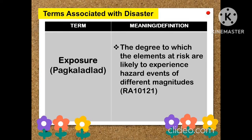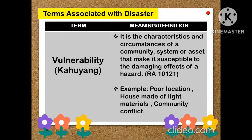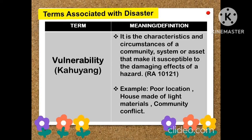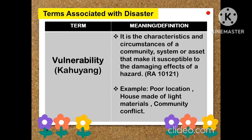Exposure is the degree to which the elements at risk are likely to experience hazard events in terms of different magnitudes. Vulnerability is the characteristics and circumstances of a community, system, or asset that make it susceptible to the damaging effects of a hazard. Examples include poor location, houses made of light materials, and community conflict.